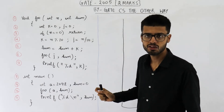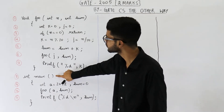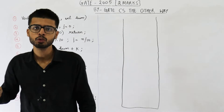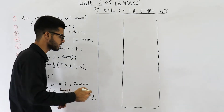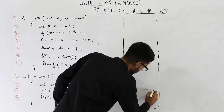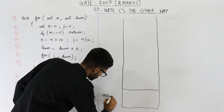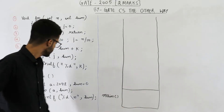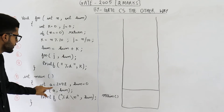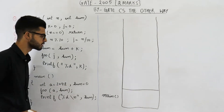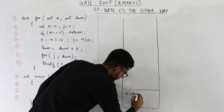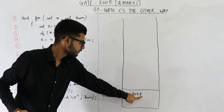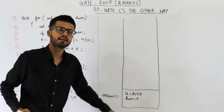Execution always begins from the main function. That means the first line that is going to be executed is this one — it is a function call. For every function call, you are going to push an activation record onto the stack. So the activation record for main is pushed. All the local variables of this function will be allocated here. So the first line of main is: int a = 2048 and sum = 0. You are declaring two integer variables a and sum, with values 2048 and 0.